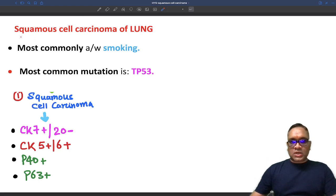Hello everyone, in this Hilding Shorts, I am going to tell you about Squamous Cell Carcinoma of the Lung, which is most commonly associated with smoking and the most common mutation is P53.